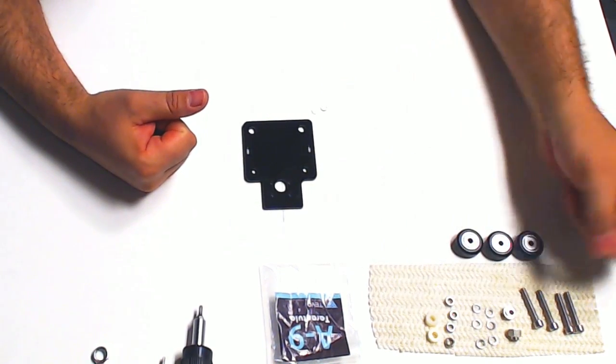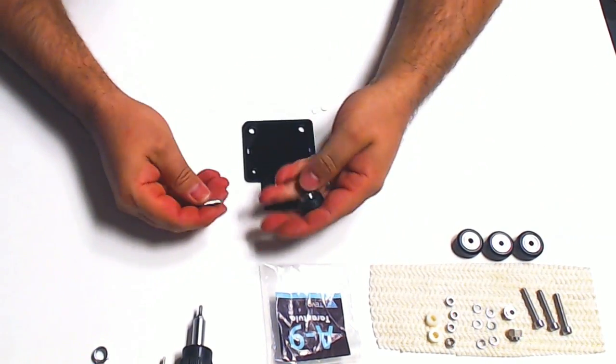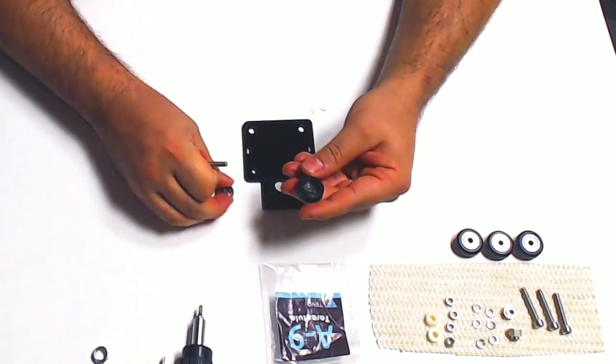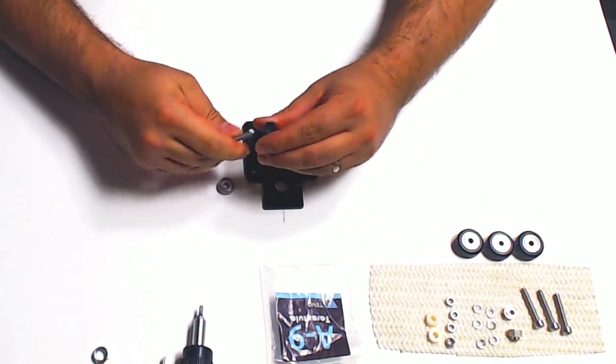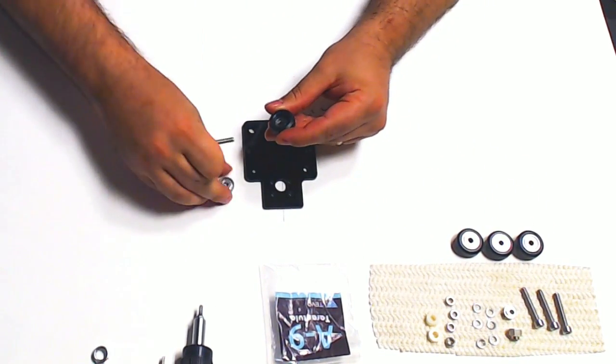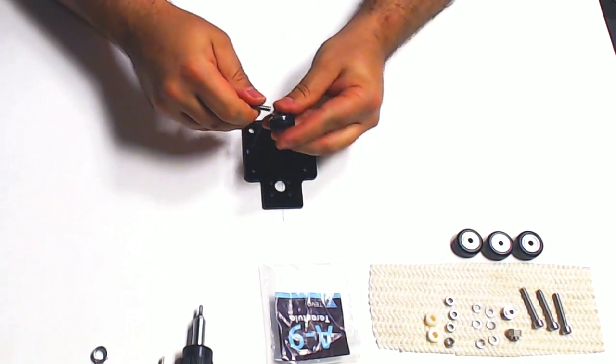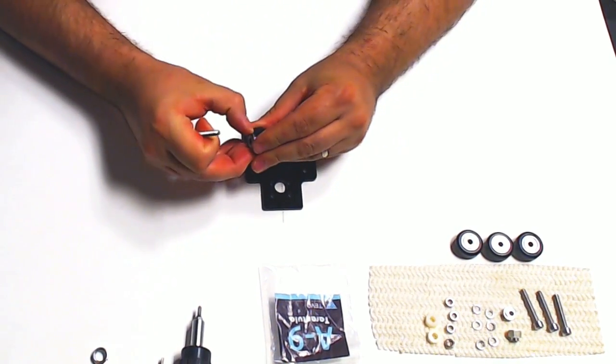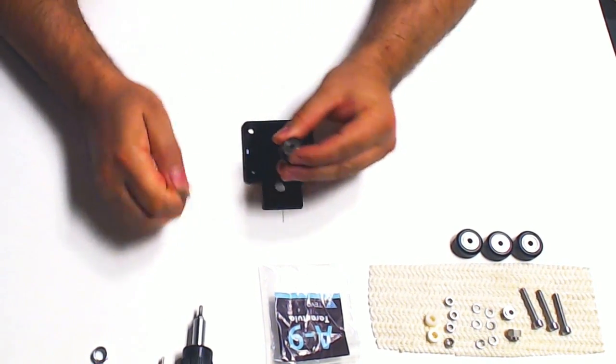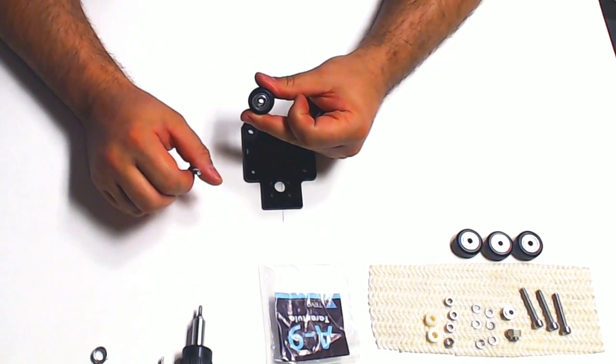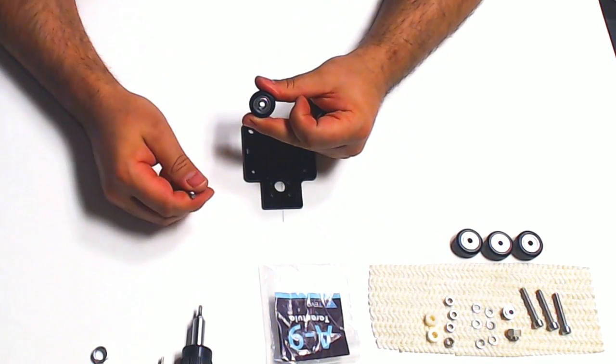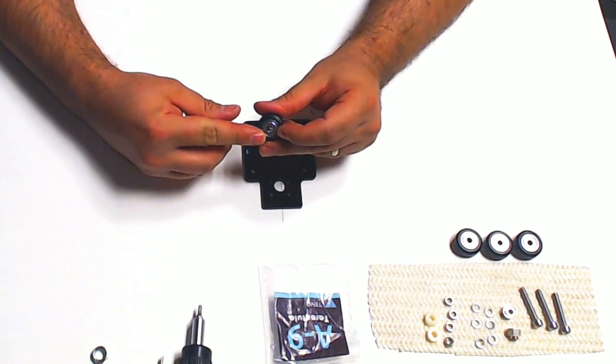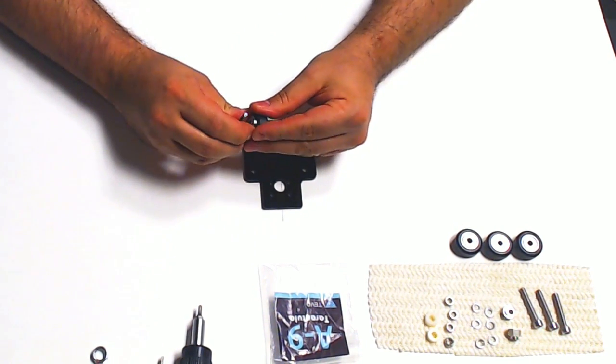So the first thing we want to do is grab one of these bolts and you want to actually pop out each one of these bearings. I've already done it on all of mine, but just kind of wedge the screw in there and pop it out. These are in there pretty tight. Just use the screw and try to pull each one of these out. So go ahead and pause the video and do that on all four of these. We're going to show you a trick that will make these move much smoother than the way the instructions have us putting them together.